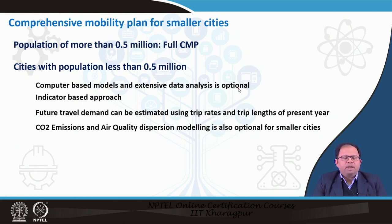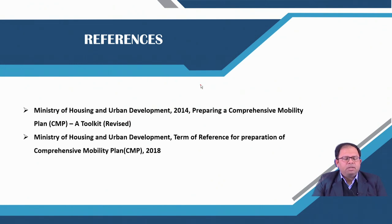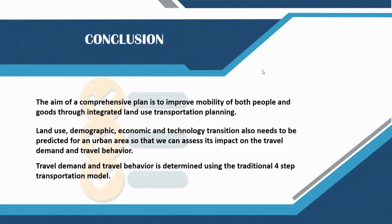In conclusion, the aim of a comprehensive mobility plan is to improve mobility of both people and goods through integrated land use and transportation planning. Land use, demographic, economic, and technology transitions need to be predicted for an urban area so we can assess their impact on travel demand and travel behavior. Travel demand and travel behavior are determined using the traditional four-step transportation model. Thank you.